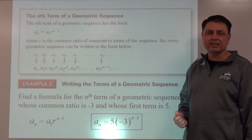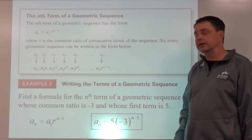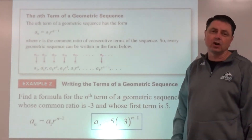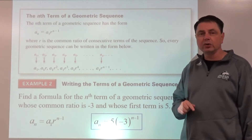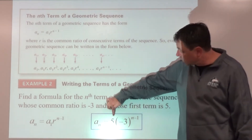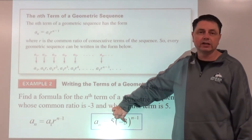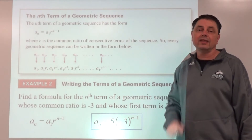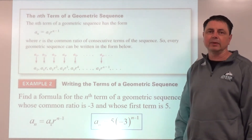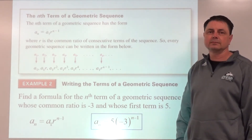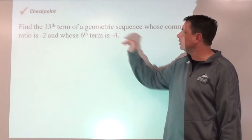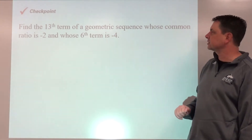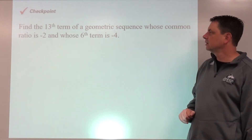The parentheses around negative 3 are very necessary — especially since r is negative. You are not allowed to multiply the 5 and negative 3 together; they do not have the same exponent. Checkpoint: pause here and find the 13th term of the geometric sequence using algebra.